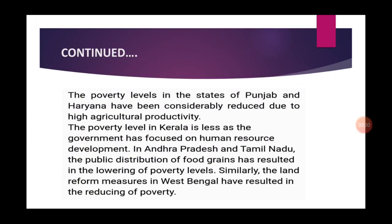The poverty levels in Punjab and Haryana have been considerably reduced due to high agricultural productivity. As the fertility of the soil is very good there and agriculture is developed, people are doing farming and production is high, making agricultural productivity a major reason behind poverty reduction in these states.